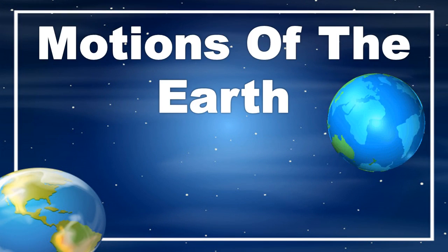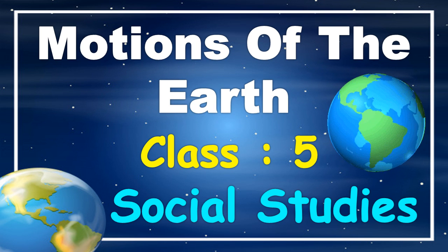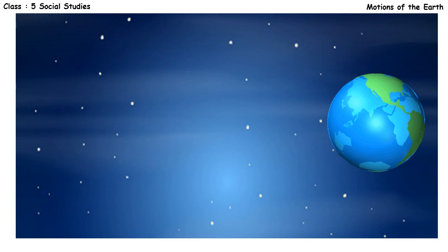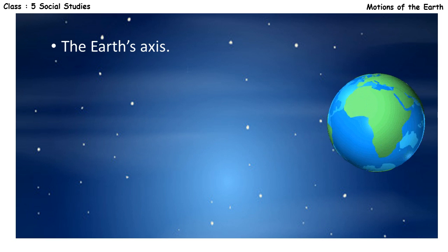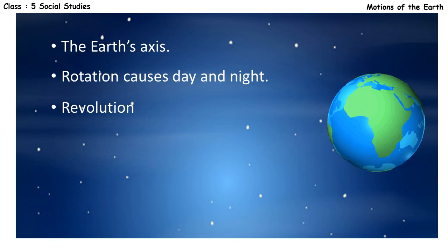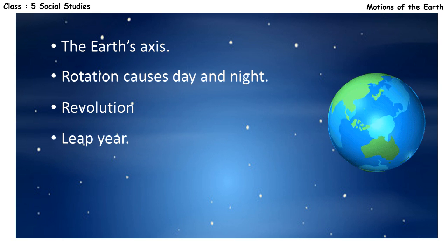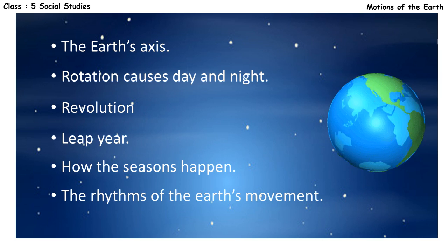The Earth's Axis – Motions of the Earth. Class 5 Social Studies. By the end of this chapter, you will get the knowledge about: the Earth's axis, rotation causes day and night, revolution, leap year, how the seasons happen, and the rhythms of the Earth's movement.